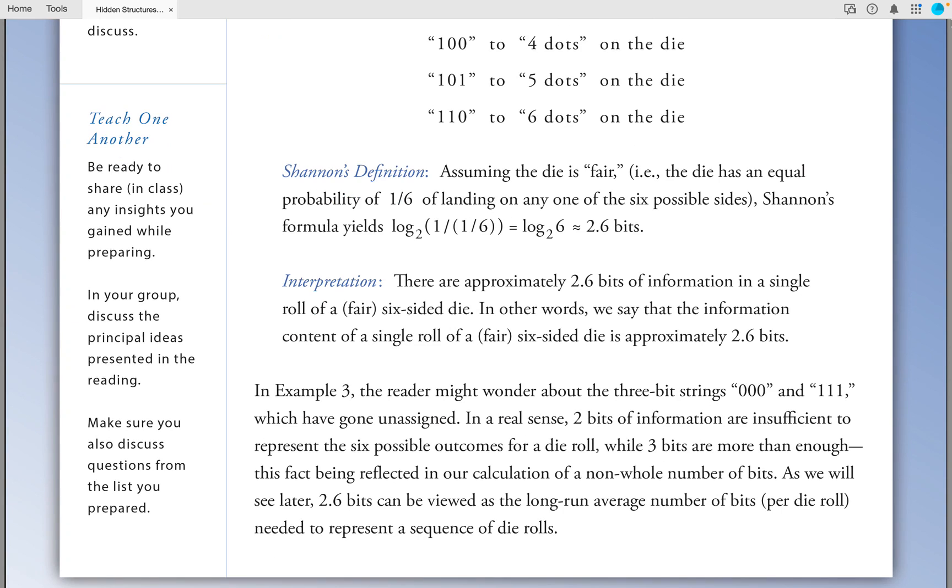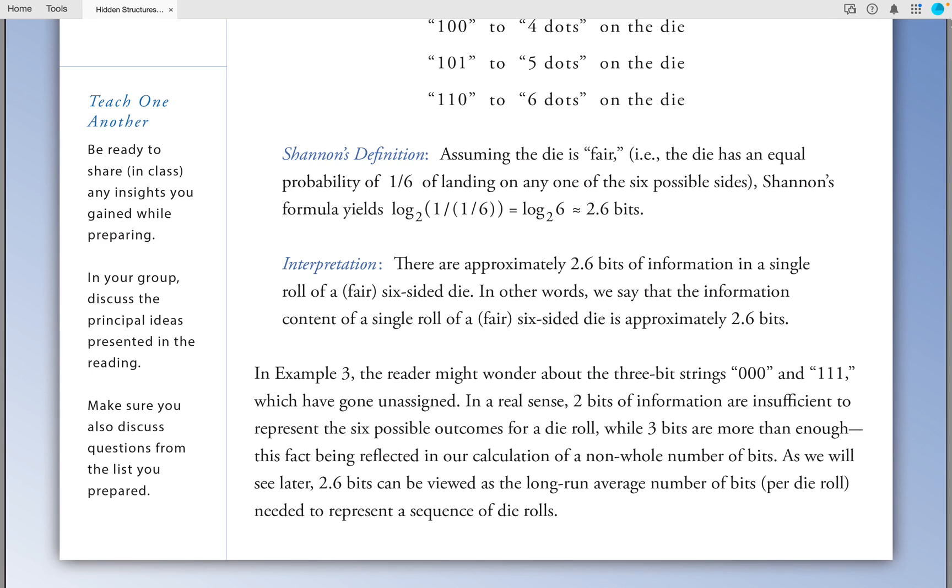Shannon's definition: Assuming the die is fair, that is, the die has an equal probability of landing on any one of the six possible sides, Shannon's formula yields log base 2 of 1 divided by 1/6, which is approximately equal to 2.6 bits. Interpretation: There are approximately 2.6 bits of information in a single roll of a fair six-sided die. In other words, we say that the information content of a single roll of a fair six-sided die is approximately 2.6 bits.